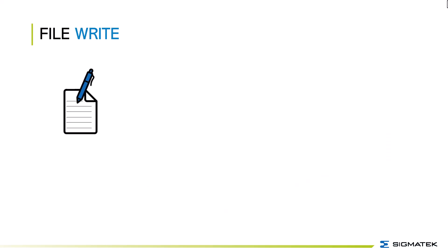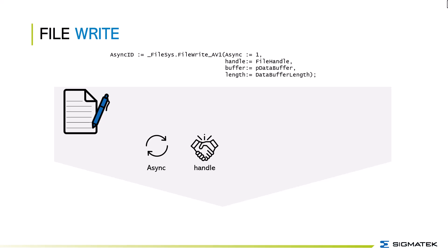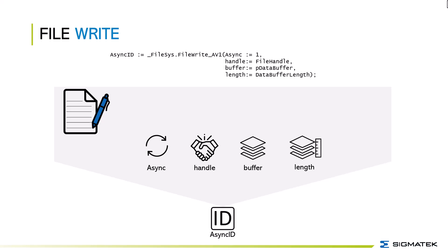To write into a file you use the file_write_av1 method, set to asynchronous operation. The next parameter you need is the file handle — the reference between the file and the system. With this file handle the system always knows which file you want to write into. Then you need the buffer with the data that should be written, and at last the length of the buffer. This method returns an asynchronous ID needed to know the status of the asynchronous task.